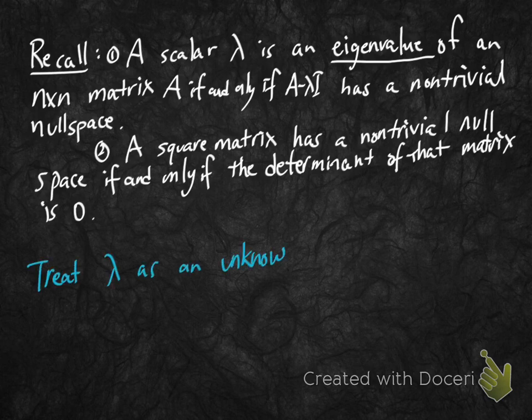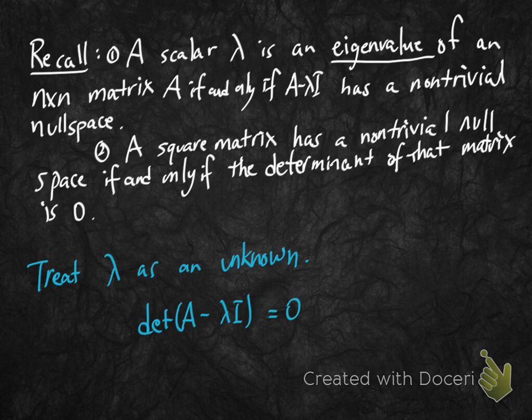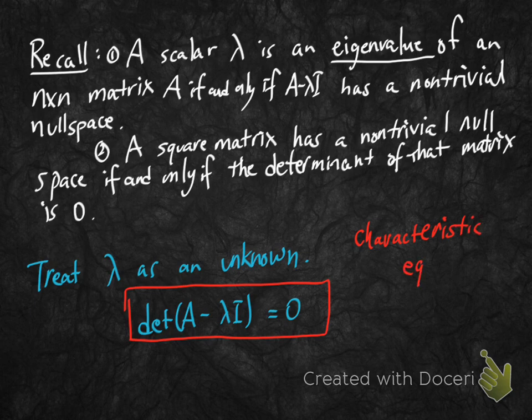The idea is to treat lambda as an unknown and look at the determinant of A minus lambda times the identity — when is that equal to zero? This equation, determinant of A minus lambda times the identity equals zero, is called the characteristic equation.